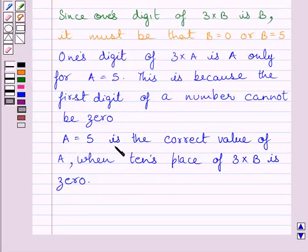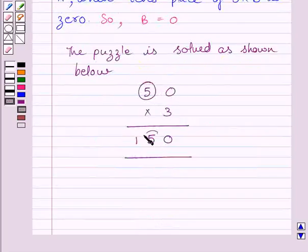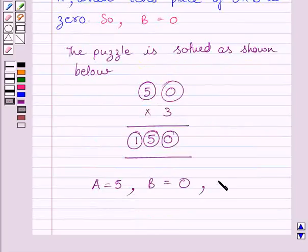Now, we can write A is equal to 5 is the correct value of A when 10th place of 3 multiplied by B is 0. So, value of B is equal to 0. Now, we can solve the puzzle as 50 multiplied by 3 gives 150. We get the value of A as 5, value of B is equal to 0, and value of C is equal to 1.